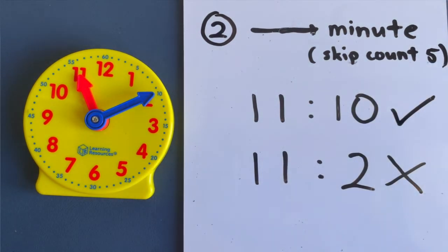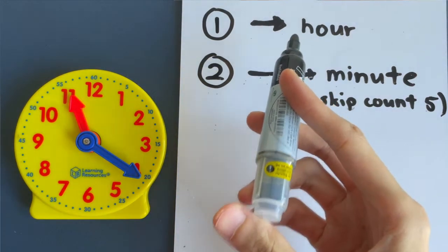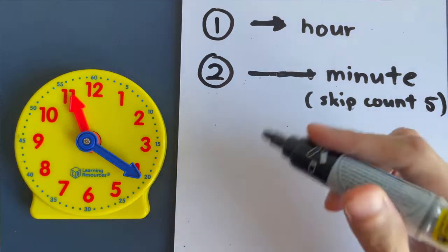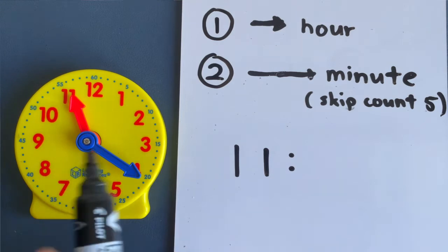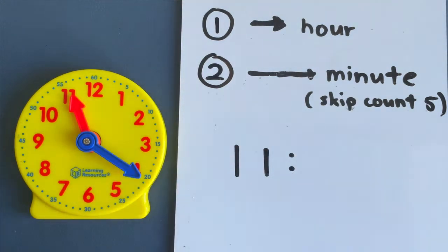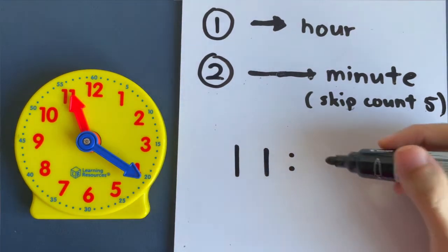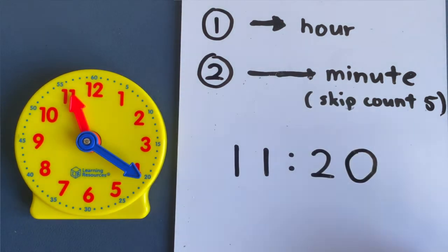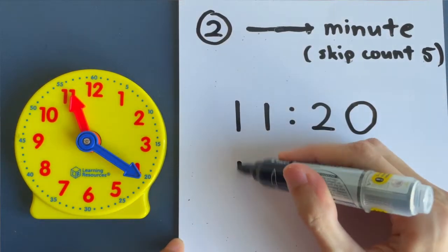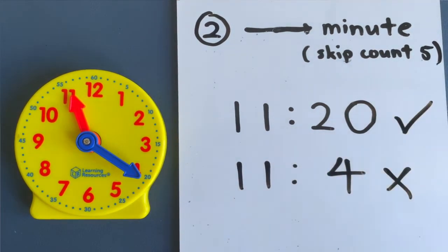Second example — follow my steps again. What time is it? Look at the hour hand — it's still pointing at 11, so we write it down. Second step: minute hand — skip count in fives. 5, 10, 15, 20 — stop. So the time is 11:20. Once again, the time is not 11:4 — that is wrong. 11:20 is the correct answer.